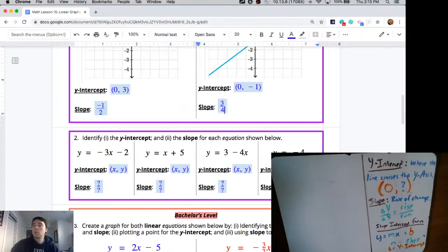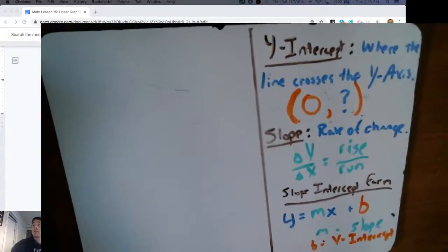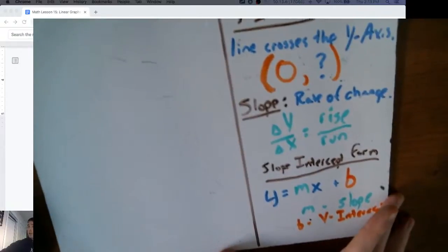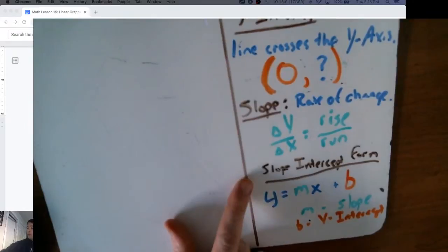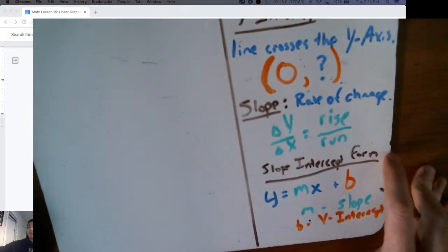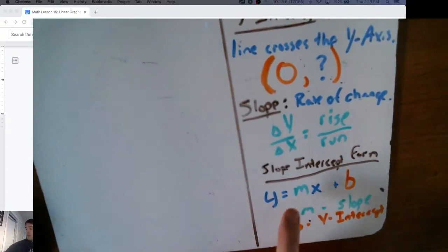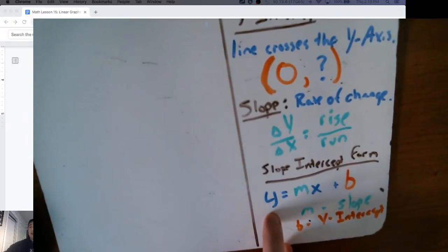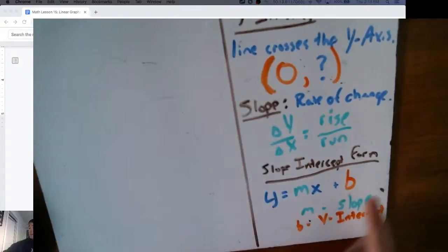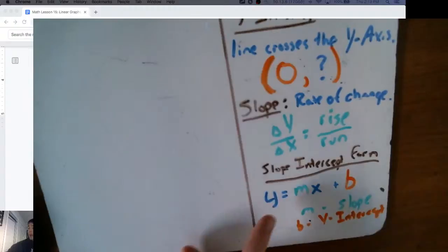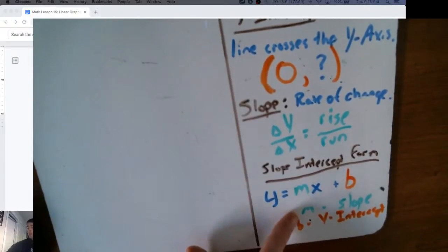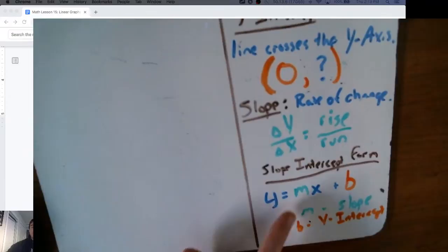Before we get into problem two, I want to talk about the slope-intercept form, which is also in your key terms on page one. Slope-intercept form is one way to write an equation for every linear graph you run into. The equation is built in the form y equals mx plus b, where y is solved or all by itself on the left side. Any linear equation in this y-equals form automatically tells you the slope and the y-intercept if you know how to read it.